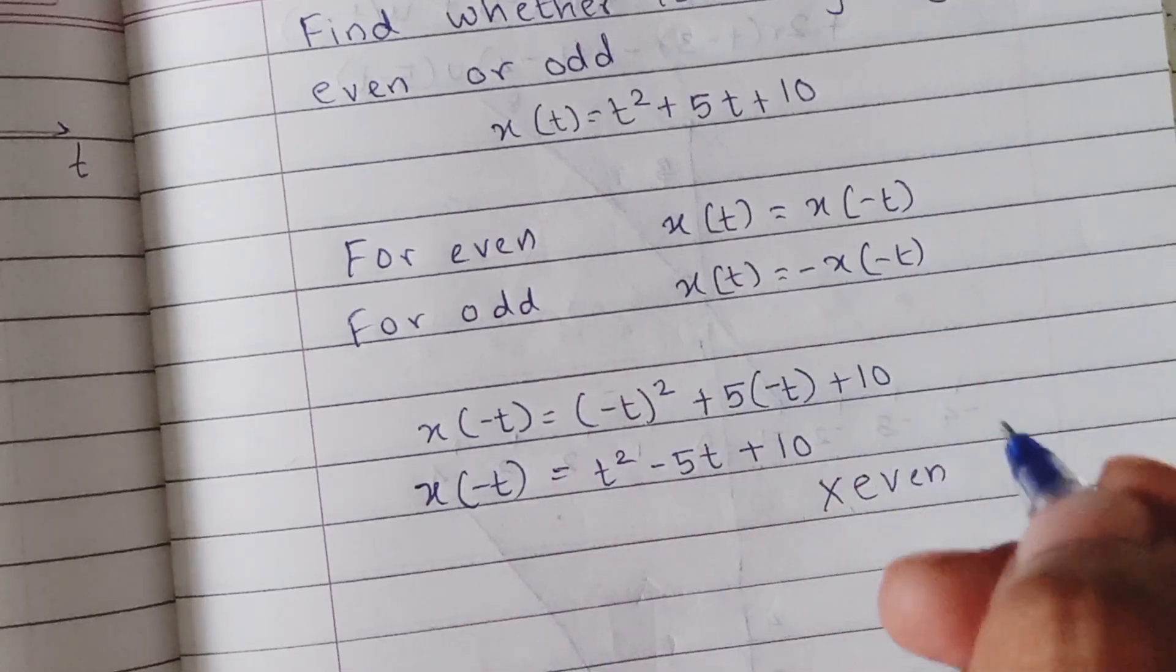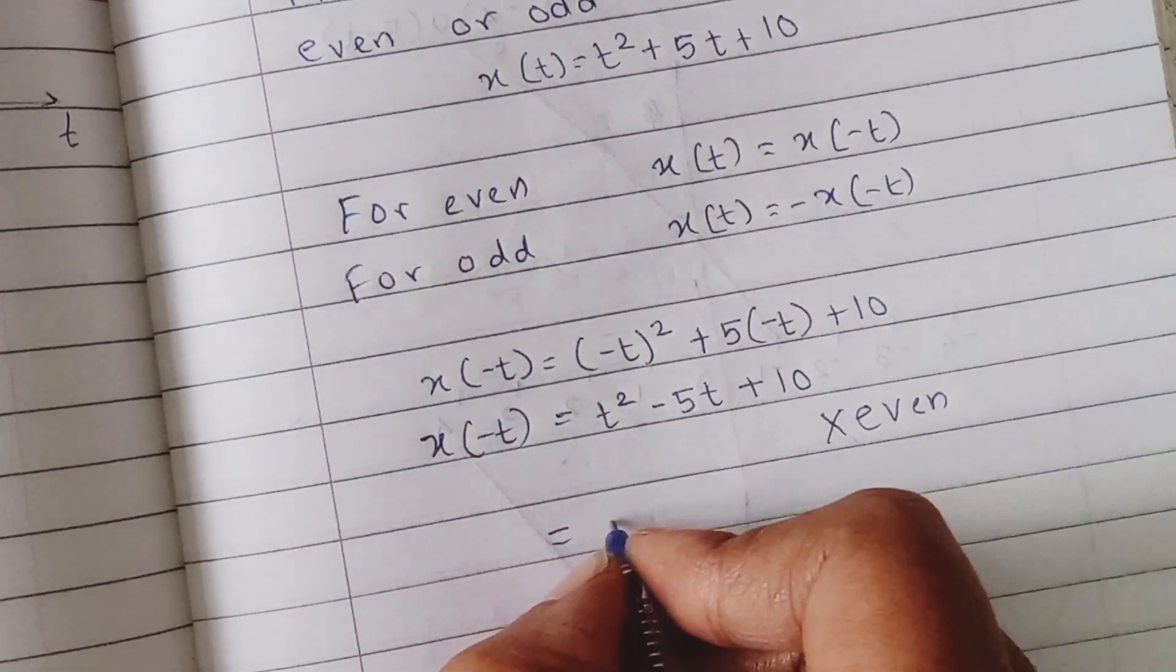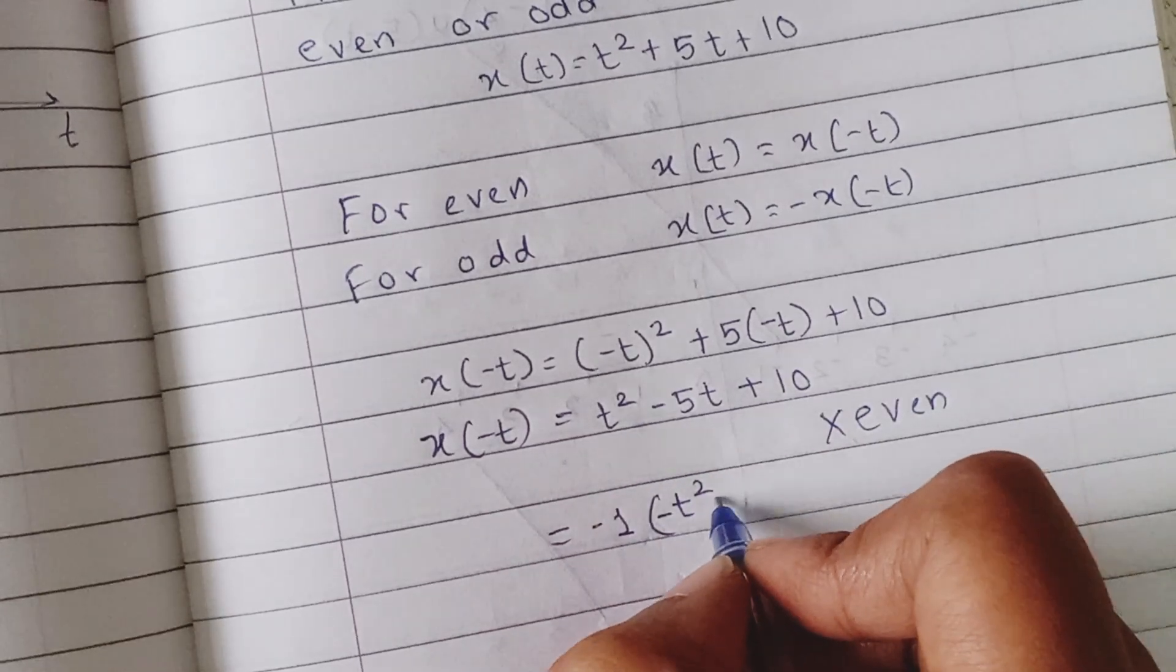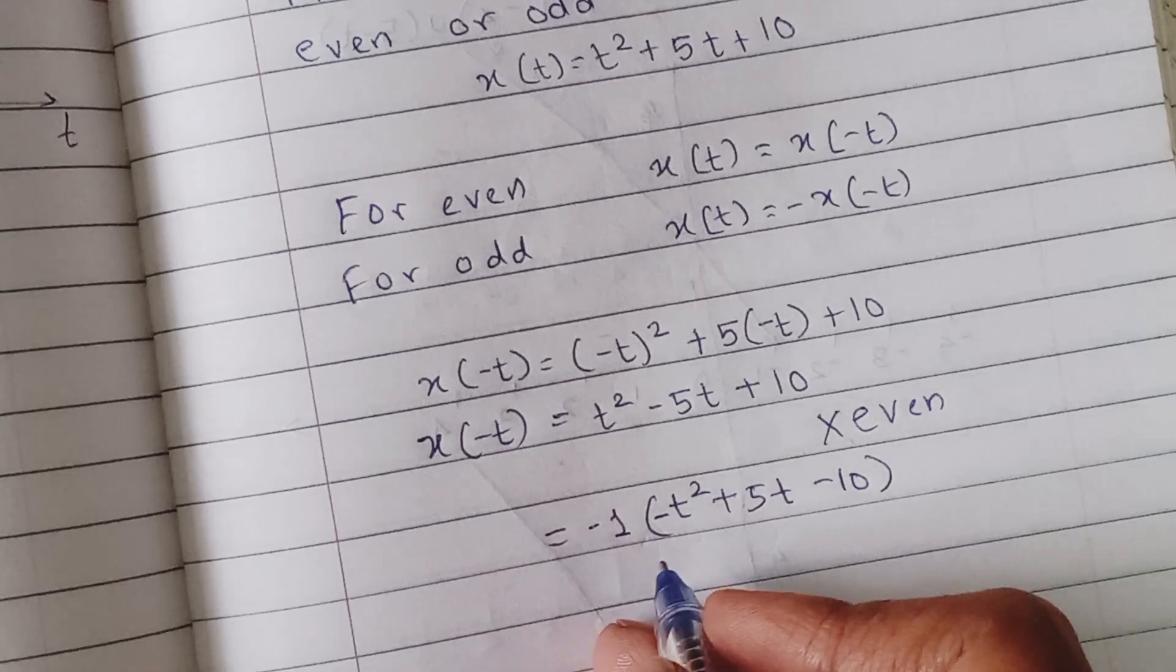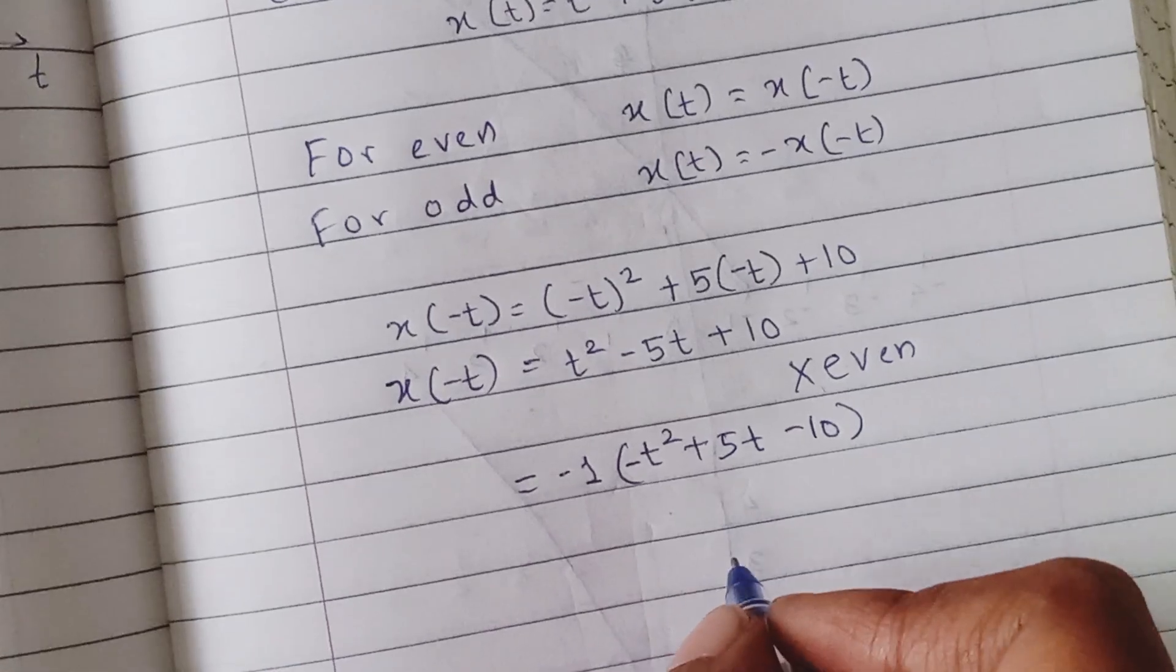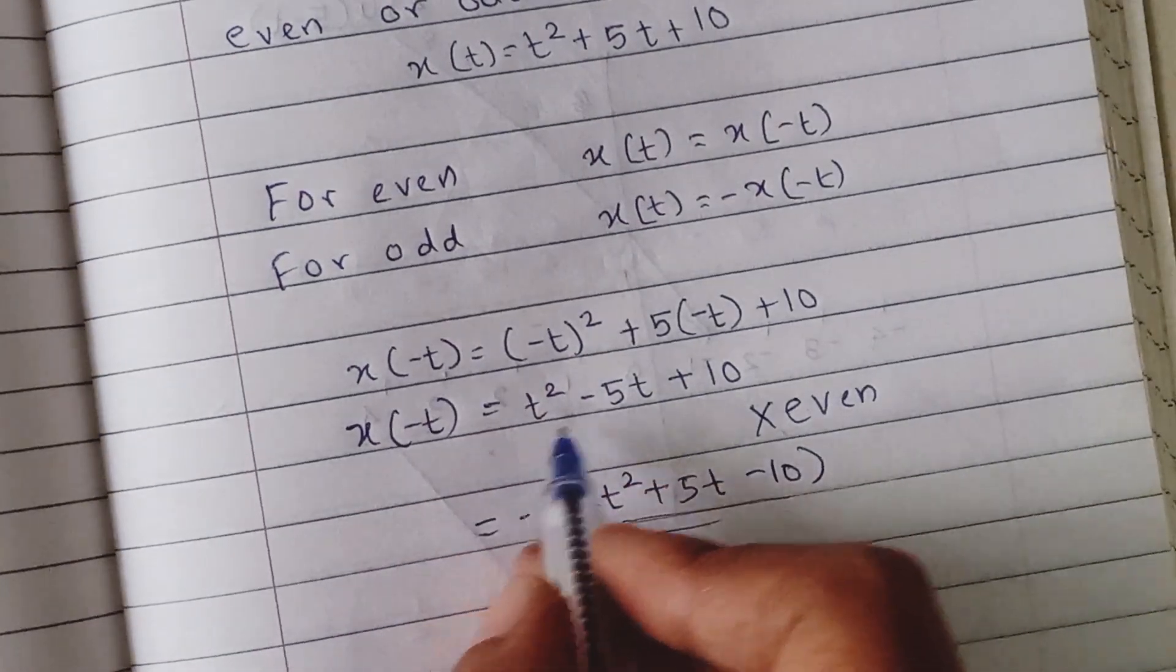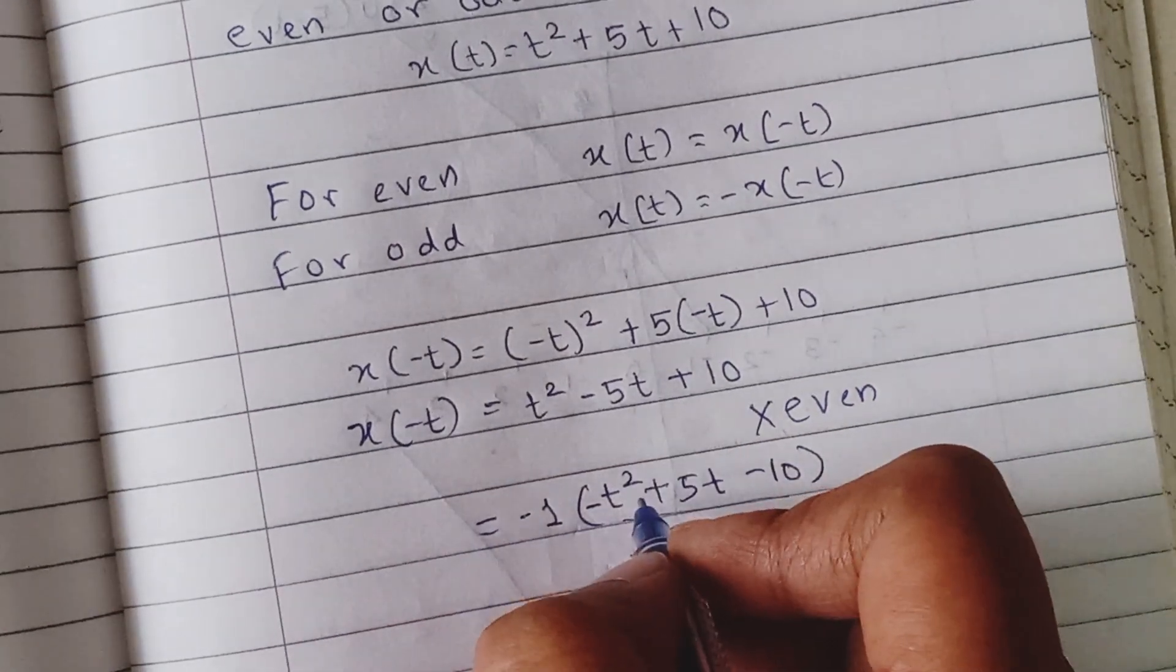Now similarly for odd, it should also be equal to minus of x(-t). Now even if you take the minus sign outside, like if you say -1, then it will be -t² + 5t - 10. Then if this was equivalent to minus of x(-t), then also we could have called this odd. But if you see, this is not equivalent to x(t). So if you see, x(-t) is t² - 5t + 10. So this is also not equal to minus of x(-t).